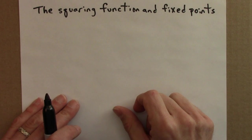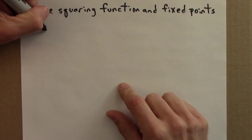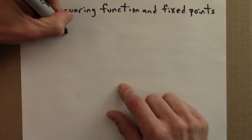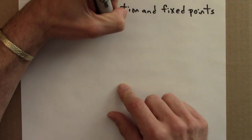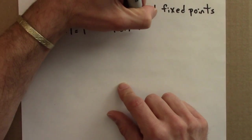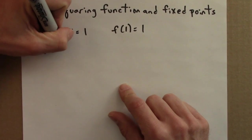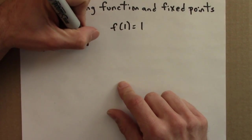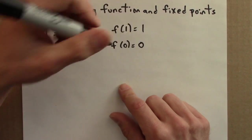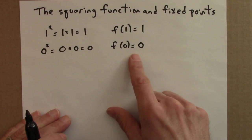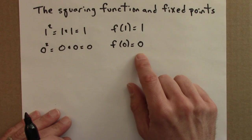There are two numbers that don't change when they're squared: 0 and 1. 1 squared is 1 times 1, and that's 1, so we could say f of 1 is 1. And 0 squared is 0 times 0, which is definitely 0, so f of 0 is 0. These are fixed points — points that do not change when iterated.